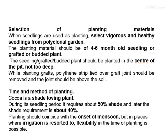For selection of planting materials, select vigorous and healthy seedlings from the polyclonal gardens. The planting material should be 4 to 6 month old seedlings or grafted or budded plants. The seedling or grafted or budded plants should be planted in the center of the pits, not too deep. While planting, the polythene strip tied over the graft joint should be removed and the joint should be above the soil. Cocoa is a shade-loving plant. During its seedling period, it requires about 50% shade and later the shade requirement is about 40%. Planting should coincide with the onset of monsoon; where irrigation is available, flexibility in planting time is possible.